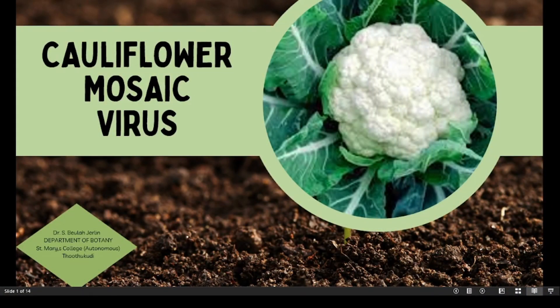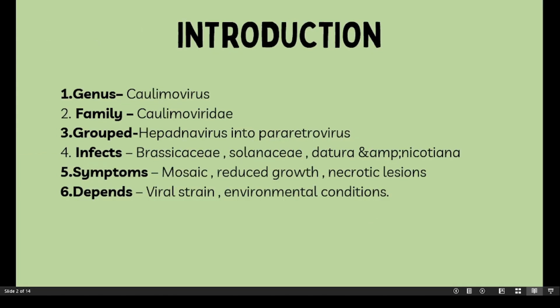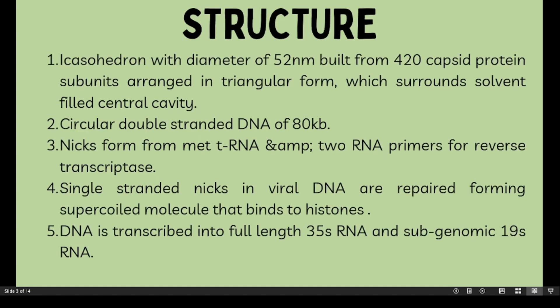Cauliflower Mosaic Virus is a double-stranded DNA plant virus coming under the family Caulimoviridae, of genus Caulimovirus. The CaMV virus infects mostly plants of the family Brassicaceae, but some Cauliflower Mosaic Virus strains are also able to infect Solanaceae members.